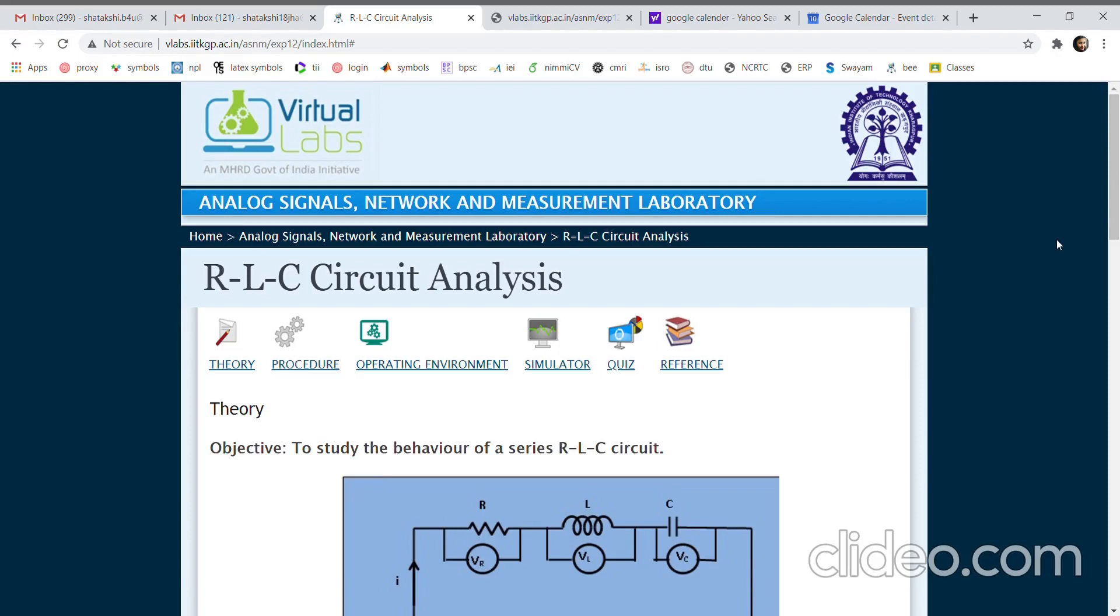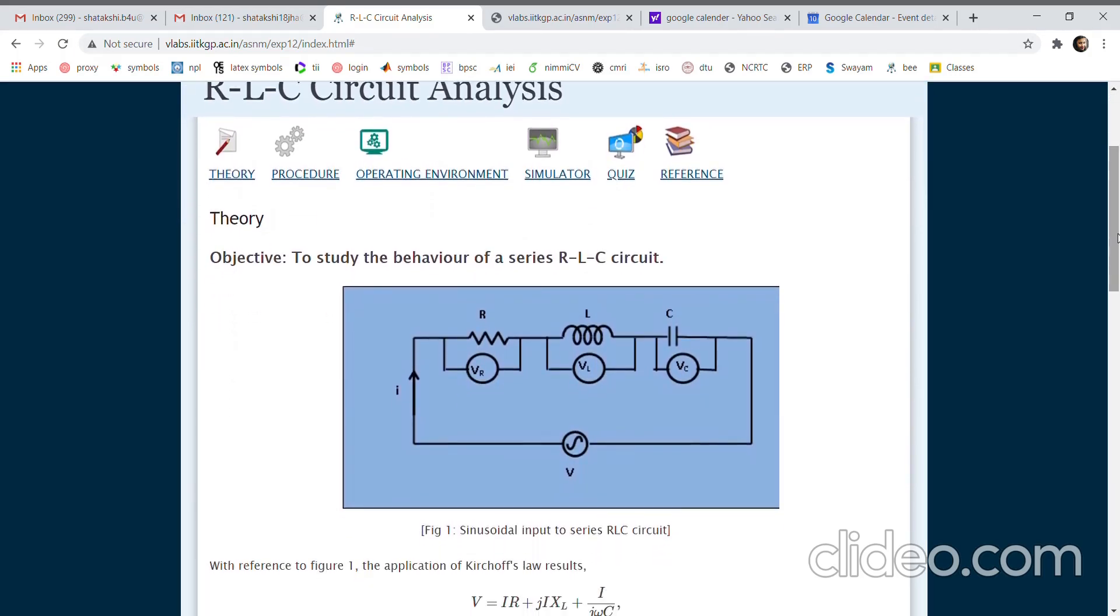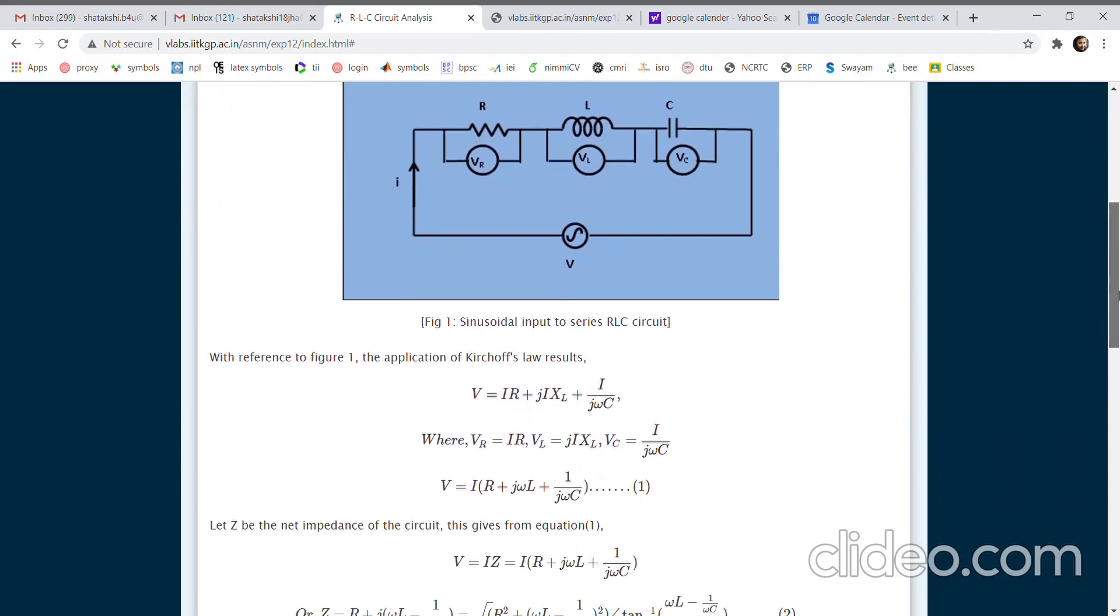Good afternoon everyone. In this experiment we will see how different parameters behave like the power factor, current in the circuit, and voltages across different elements in a series RLC circuit. This is the theory which tells how to obtain the current in the circuit and voltage across each element.